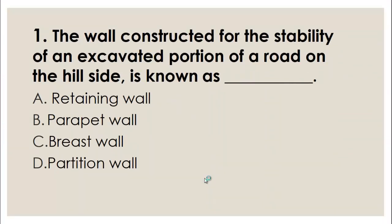MCQ number one is from soil mechanics. The wall constructed for the stability of an excavated portion of a road on the hillside is known as: A) Retaining wall, B) Parapet wall, C) Breast wall, D) Partition wall. A retaining wall retains soil or water, and a breast wall is a special type of retaining wall constructed on the hillside of a road to retain soil from coming onto the road. The right choice is C, breast wall.